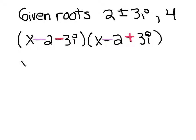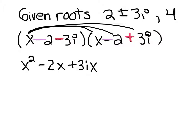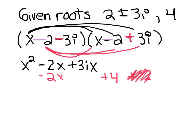So if I multiply this out, I get x², and then I have -2x and +3ix. And then when I multiply out the next section, I get a -2x and a +4 and a—sorry, I get a -2 times 3i, so -6i. And then when I multiply out the last part, I get a -3ix, a +6i, and a +9.